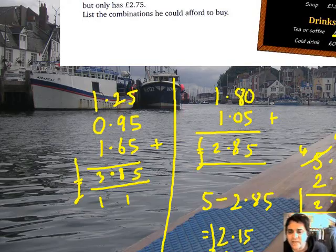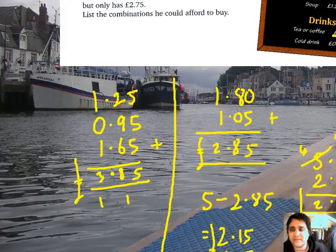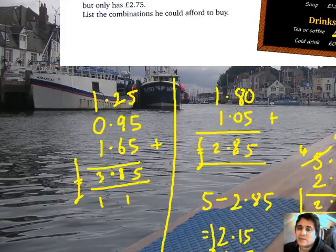£2.15 change if you're buying £2.85 worth of lunch, and that's for Jill. Now, what about Zach? Zach wants to eat something and he wants to drink something. Nice sensible, isn't it? He said he got £2.75.